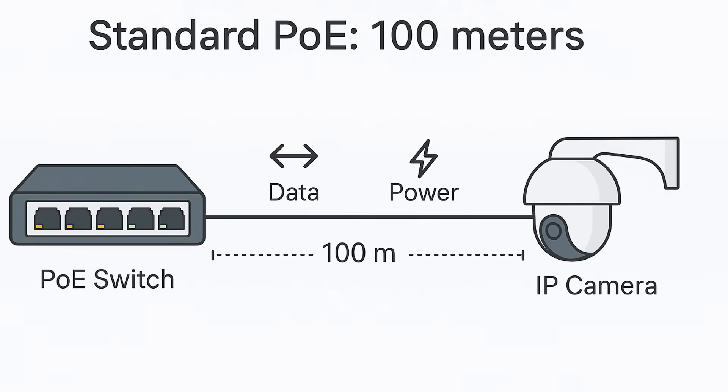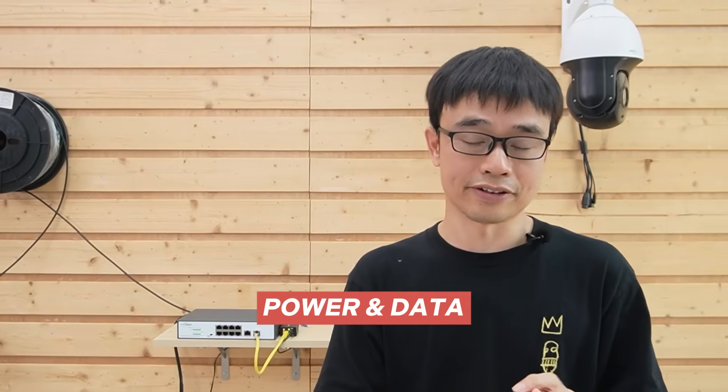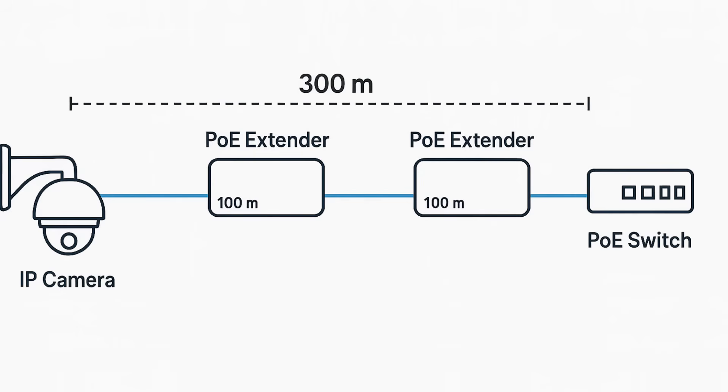We just conquered one challenge. Now let's deal with the long-run PoE in the warehouse. Remember, we have two cameras with up to 300 meters of cable run. The PoE design guide specifies a maximum distance of 100 meters between the PoE switch and the edge device. We need to push the PoE network three times beyond the standard. For data, we can place an extender every 100 meters before the signal starts dropping — the first extender boosts the signal for another 100 meters, then a second extender gives us another 100 meters, for a total of 300 meters.